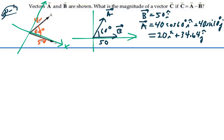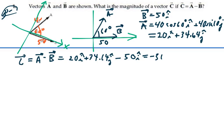All right, so now we have our two vectors, A and B. And if I say that C is equal to A minus B, then that is equal to 20I plus 34.64J minus B, which is 50I. So this is going to be equal to -30I plus 34.64J.